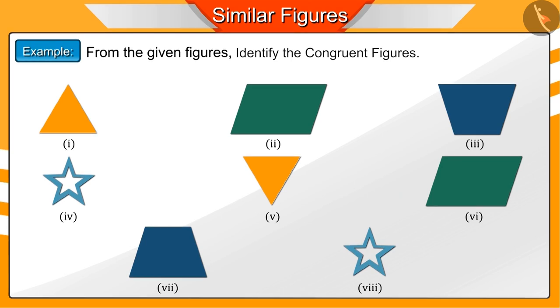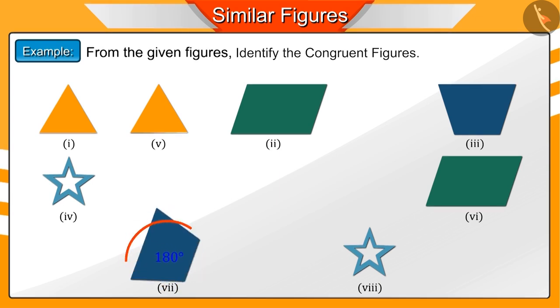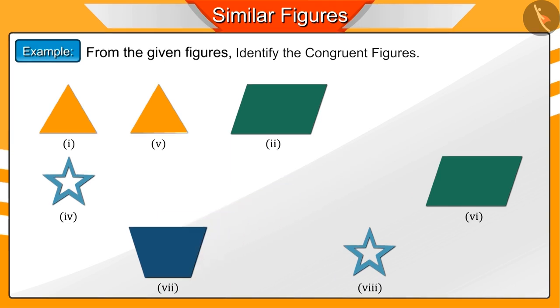Now, identify the congruent figures from the given figures. You can see that if figure 5 is rotated by 180 degrees, then it is congruent to figure 1. Similarly, if figure 7 is rotated by 180 degrees, then it is congruent to figure 3.